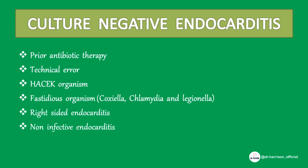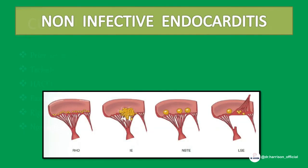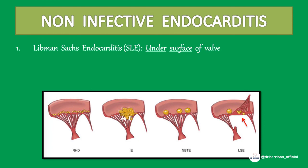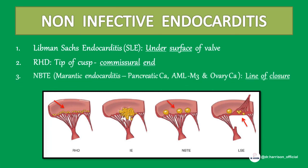Non-infective endocarditis: these are other diseases that cause growths on valves similar to infective endocarditis. One: Libman-Sacks endocarditis — endocarditis of SLE, growth present on the undersurface of the valve. Two: RHD — growth present at the tip of the cusps at the commissures. Three: NBT, also called marantic endocarditis, present in pancreatic carcinoma, AML-M3, and ovarian cancer — growth is present along the line of closure.